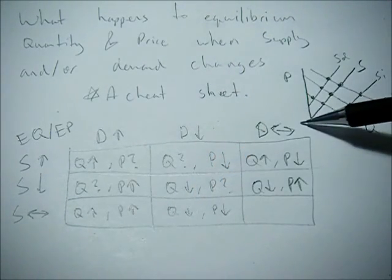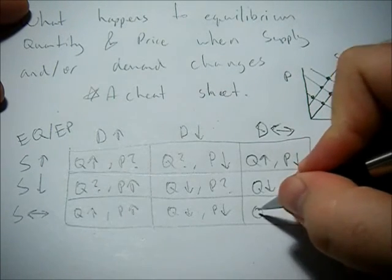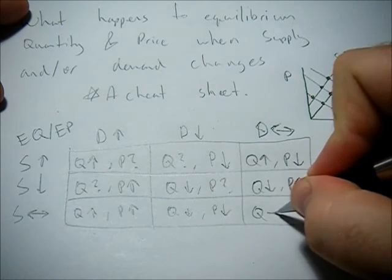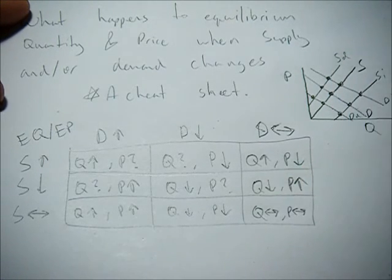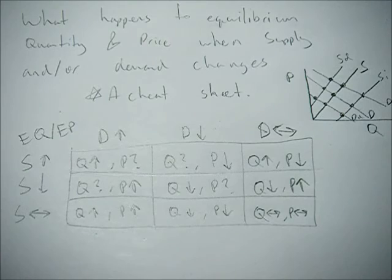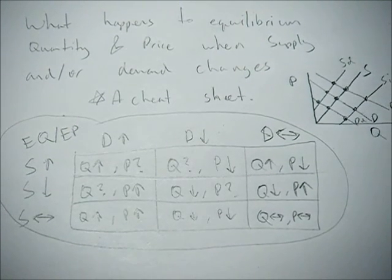And what if demand stays the same and supply stays the same? Well, we know for sure that there's no change in equilibrium quantity and no change in equilibrium price. You can visit freeeconhelp.com to get this graph as well as further explanation if you want to print it out to study from or have more questions about the topic.